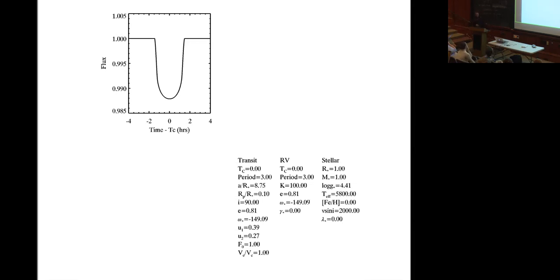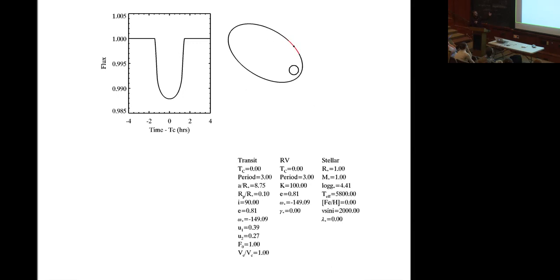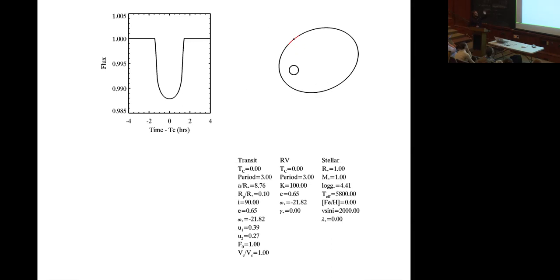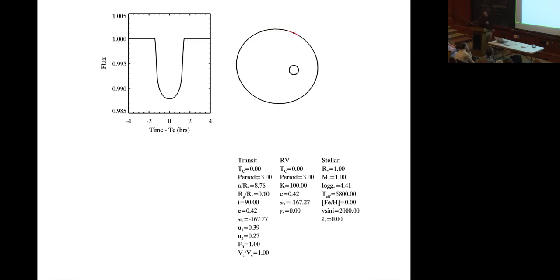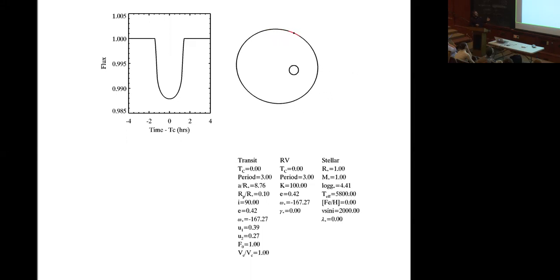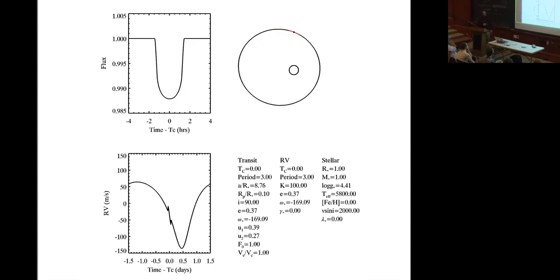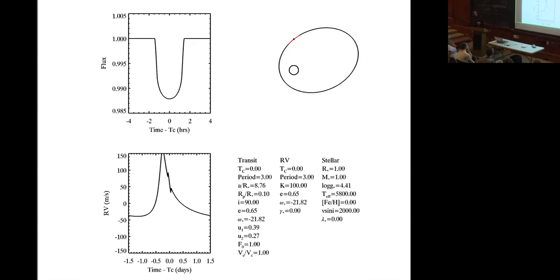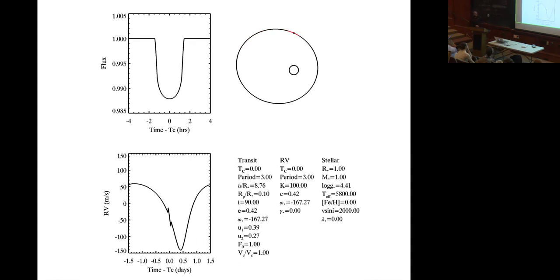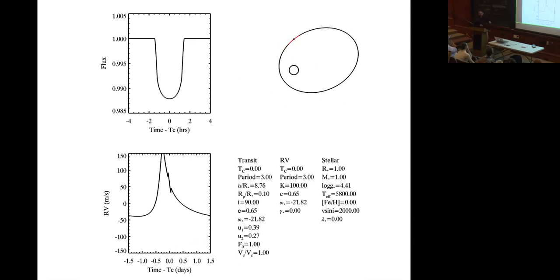To lift the veil: if you had direct imaging or a top-down view, you'd see a huge change in the orbit where there's basically no change in the transit light curve. But if you have radial velocities, you get a huge change in the radial velocity curve as it cycles through these. So you can break this degeneracy very quickly with just a few radial velocity points.